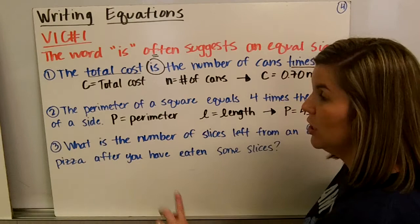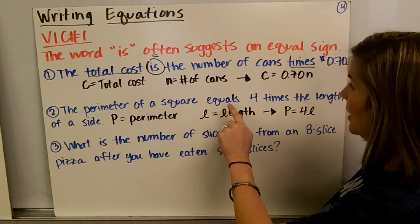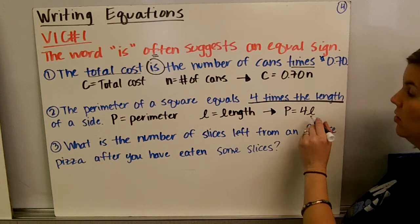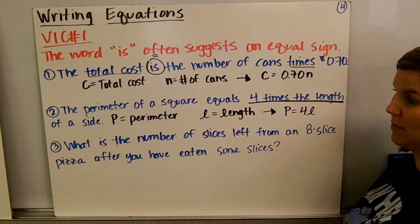The perimeter of a square equals 4 times the length of a side. Perimeter, we can use P for perimeter. Four times the length of a side—the length is L—so 4 times L. P equals 4L.